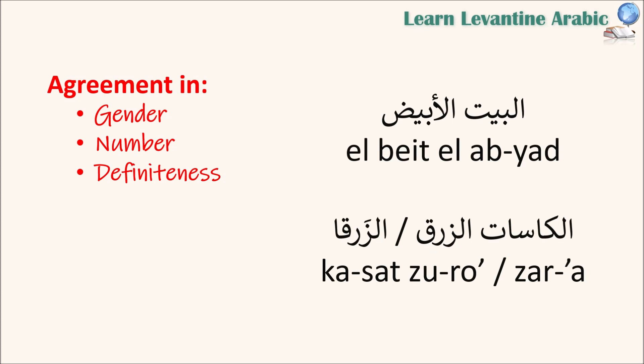Two more examples: البيت الأبيض — the white house. البيت means the house, الأبيض means the white, so it means the white house. They agree in gender — both are masculine — they agree in number, both are singular, and they agree in definiteness. Both البيت and الأبيض have التعريف, giving us a definite phrase: the white house. If the noun has التعريف, then the adjective also takes التعريف in a definite phrase.